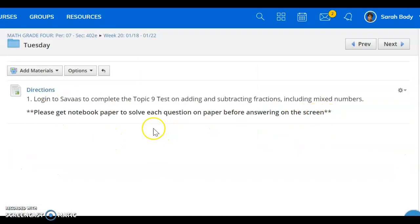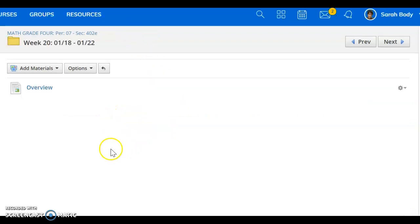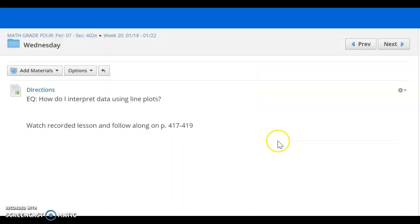So when we look at Tuesday, you are going to log into Savas to complete the Topic 9 test. That is on adding and subtracting fractions, including mixed numbers. So please grab a sheet of notebook paper, you might need more than one, and solve each question on paper before answering on the screen. We know that you have to go through a lot of those regrouping steps, so please take the time to show your work.